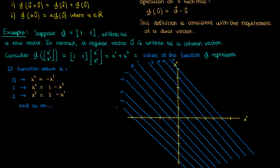Each of these lines, labeled in blue, represents a different value of my dual vector function. This line represents the possible input vectors that give a function value of 0, this line is for a value of 1, and so on — negative 1, negative 2, positive 2, etc. I've labeled them from negative 5 to 5. So in the end, this graph of function values represents my dual vector: it's a function that gives different values for different input vectors, with those values corresponding to these lines.